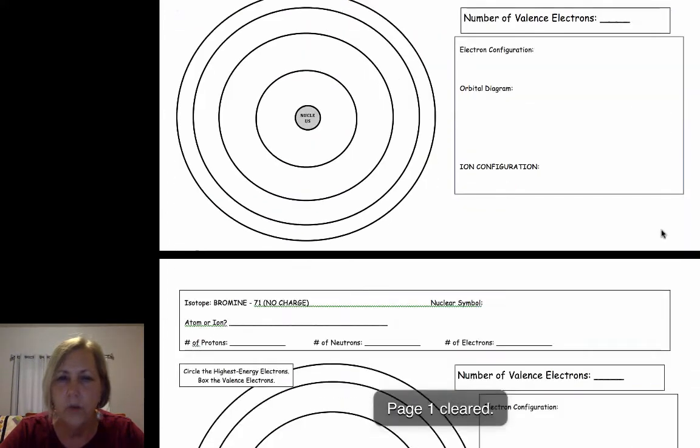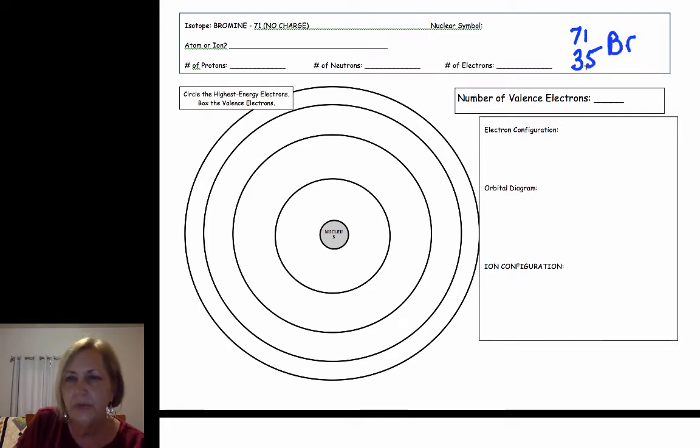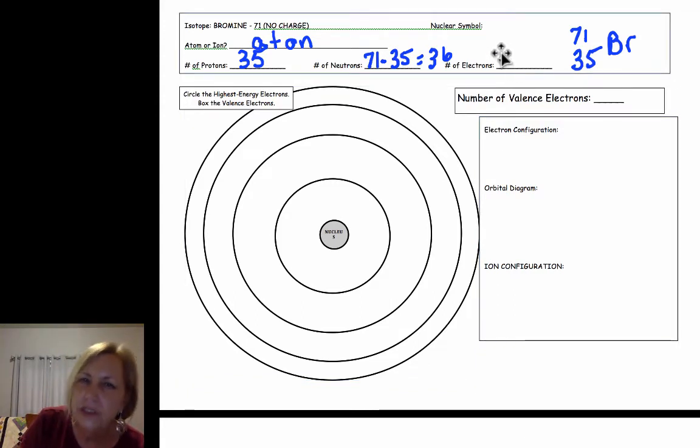Let's do one more of these. It's another one that happens to be no charge. I have bromine and it says bromine-71, so that means its mass number is 71. If you look at the periodic table, it's element 35, so we put that on the bottom. Nothing in the upper right hand side because it's not charged. Since it's an atom, it's neutral, I have to have the same number of electrons as I have protons.